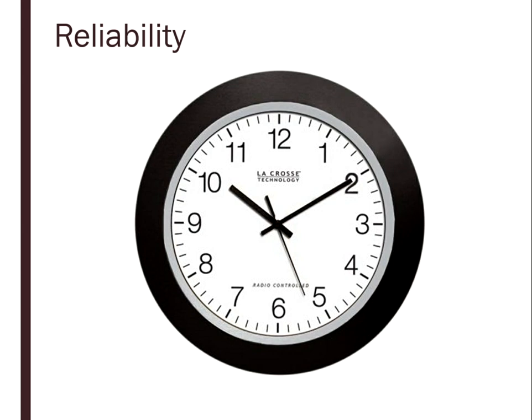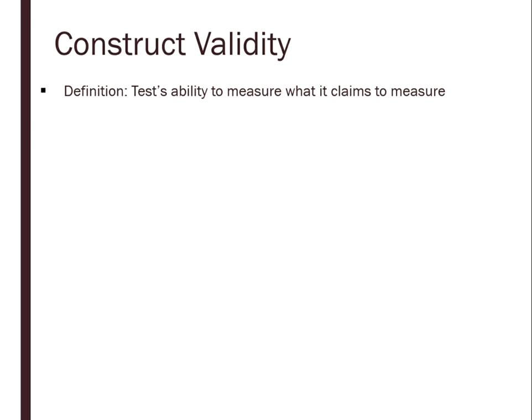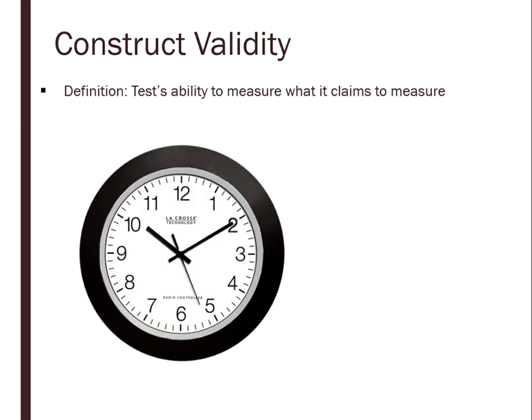That clock is very reliable — every time it will give you that same number, time plus X. But here's the question: is it valid? Does it measure what it claims to measure? A clock claims to measure time, but technically it's measuring time plus X. So while it is highly reliable, giving the same number every single time, it is not valid. Construct validity is the term we use when a measure validly measures the construct — in this case, time, but it could be intelligence, aggression, or whatever you're measuring.